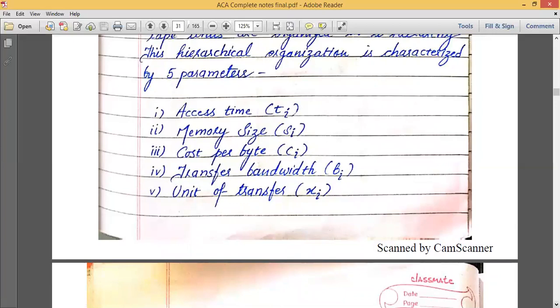The third one is cost per byte. Cost per byte of different memory is different. A hard disk of some 1TB will cost around 3,000 to 4,000. But RAM of 1TB will cost much higher than this 3,000 to 4,000 price. So cost per byte of different types of memory will be different. This is the third parameter which will differentiate or arrange the memory, different memory devices into a hierarchy.